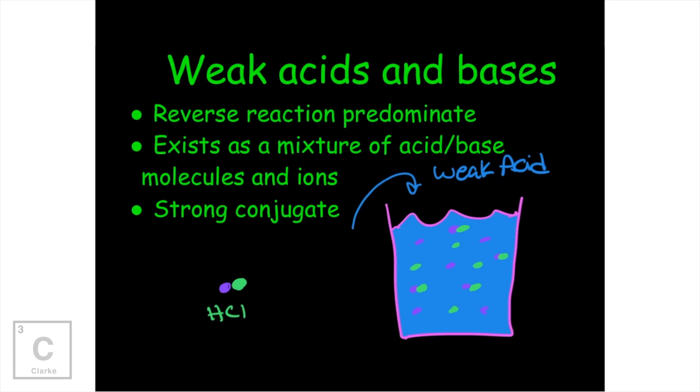And that's what I mean here by saying that it's going to exist as a mixture of your acid or base, whichever one we're talking about, and ions. This is a mixture of the molecule itself staying intact, not dissociating, and then some that actually did dissociate. For a weak acid or base, that means they have a strong conjugate.